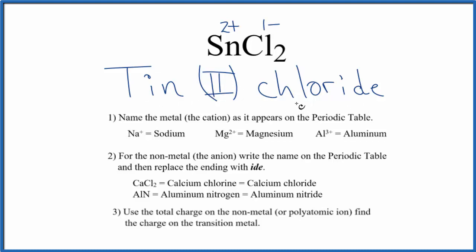If you were given this name, you'd know that tin has a charge of two plus because of the Roman numeral two. Then, because chlorine always has a one minus ionic charge,